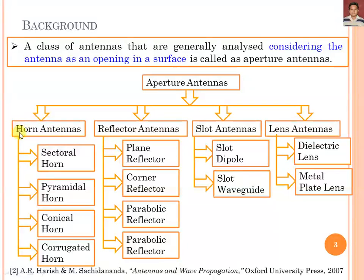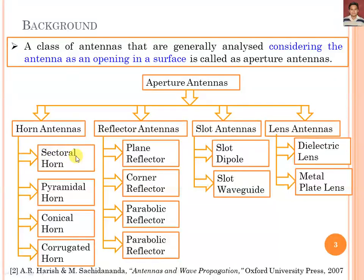We can further subcategorise the Horn Antenna into Sectoral Horn, Pyramidal Horn, Conical Horn, Corrugated Horn, and more categories may also be possible. We can again categorise the Sectoral Horn Antenna into E-Plane and H-Plane, and so on.